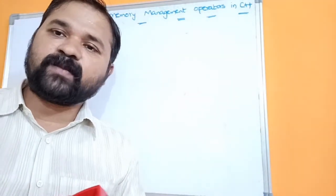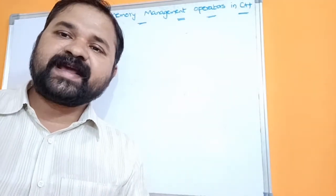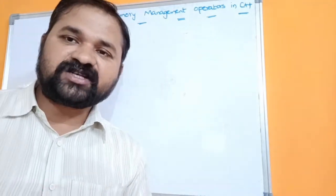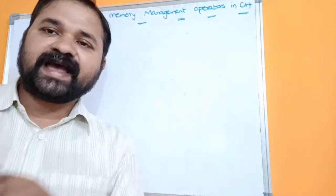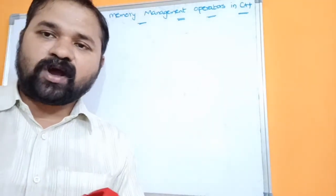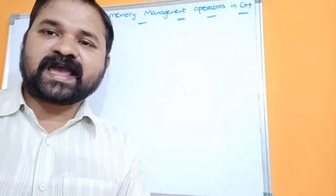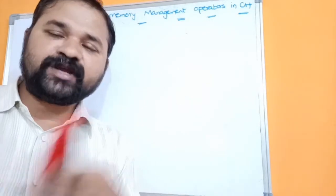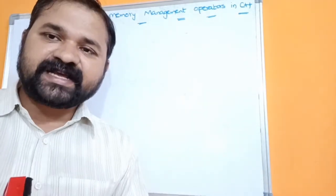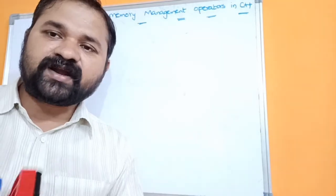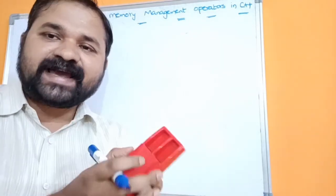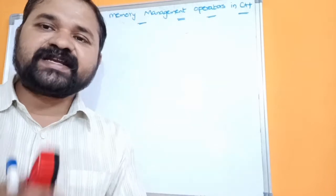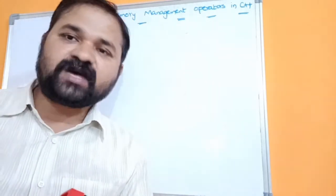In C, there are four dynamic memory management functions available: malloc function, calloc function, realloc function, and free function. Out of those functions, malloc and calloc are useful for allocating memory during runtime. Realloc function is useful in order to change the size of the memory, and free function is useful in order to destroy the memory.